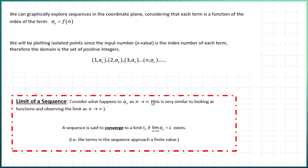We want this visual because we have the definition: the limit of a sequence is what happens to the terms a sub n as n approaches infinity — very similar to looking at functions f of x and observing what happens as x approaches infinity. A sequence converges to a limit L if that limit of the terms as n approaches infinity equals L. If that limit exists, the sequence is converging; if not, the sequence is diverging.